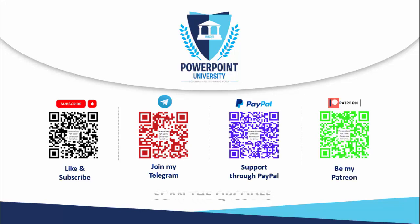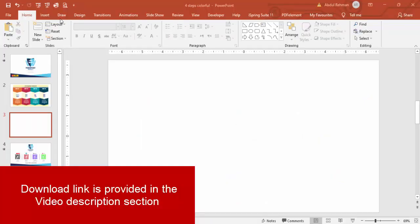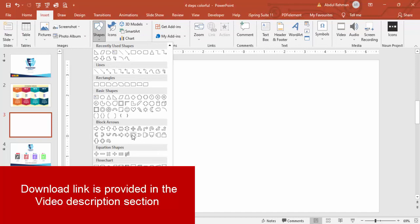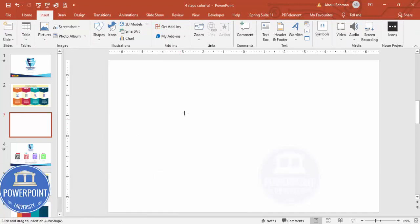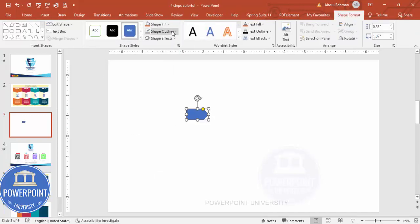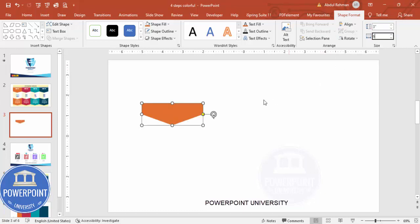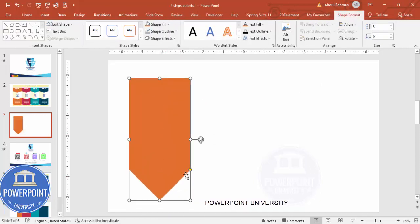Let's start the tutorial. Add a new slide, go to Insert > Shapes, and from the Block Arrows I'm going to select the Arrow Pentagon. Click it, then set shape outline to no outline. For shape fill you can give any color of your choice. Then go to Rotate and make it rotate right 90 degrees. Set the height to 3 and the width to 6.